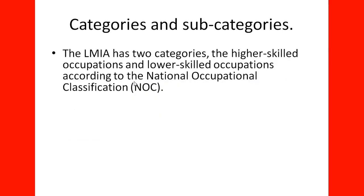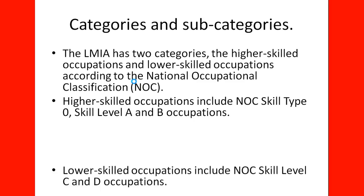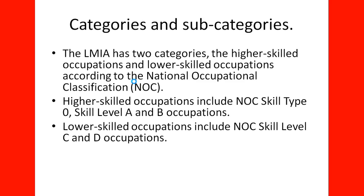The LMIA has two categories according to the National Occupational Classification (NOC): higher skilled occupations and lower skilled occupations. Higher skilled occupations include NOC skill type 0, and skill level A and B occupations. Low skilled occupations include NOC skill level C and D occupations. Each of these categories has two subcategories: high wage and low wage positions.